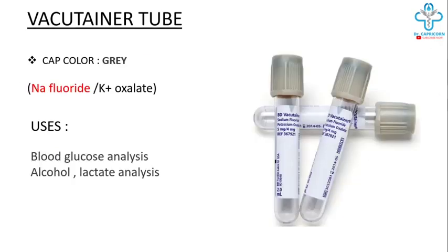Last to be collected is the gray color vacutainer tube. It contains sodium fluoride or potassium oxalate. Fluoride inhibits the enolase enzyme of glycolysis, therefore it is used in blood glucose analysis. It is also used for alcohol and lactate analysis.